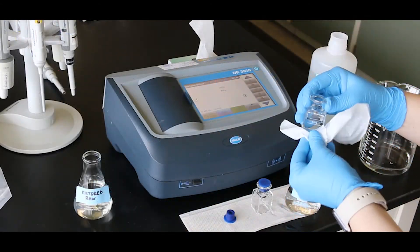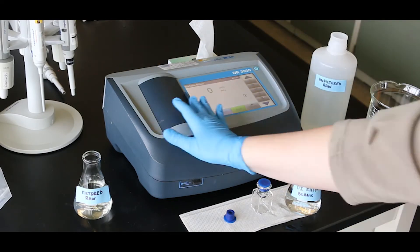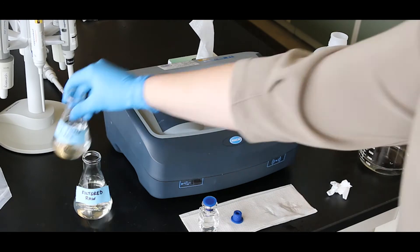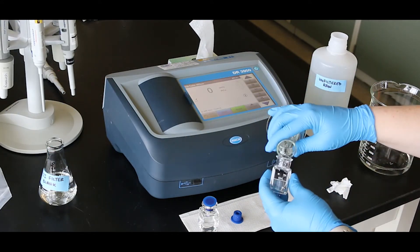For low range color, under 15 platinum cobalt units, use the same cell to zero the blank and read the prepared sample. Make sure the cell is rinsed well and conditioned with the sample.